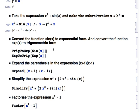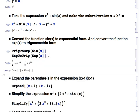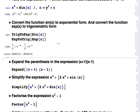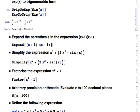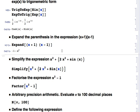We can convert between trigonometric and exponential forms for algebraic expressions. Mathematica has built-in functions TrigToExp and ExpToTrig. Converting sine of x gives the exponential form, and converting exp of x gives the trigonometric form in terms of hyperbolic functions. The Expand function is used to expand parentheses — so x plus 1 times x minus 1 expands to x squared minus 1.